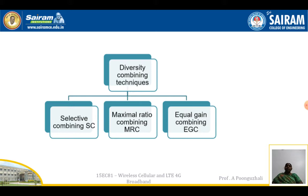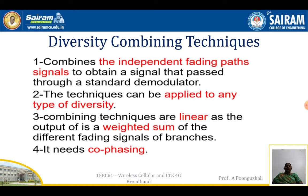Diversity combining techniques — there are three: selective combining, maximal ratio combining, and equal gain combining. Selective combining and maximal ratio combining will be used for flat fading, which we will be seeing under this module. Combining means it is going to combine the independent fading path signals to obtain a signal when it passes through a standard demodulator. Whatever signals are received at the receiver side have different fading values, and these signals are combined and passed through a standard demodulator.